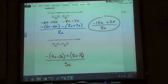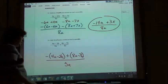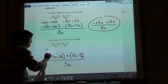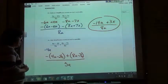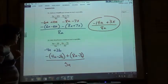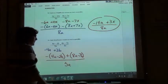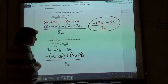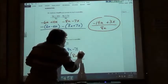So getting rid of our parentheses, what would we have up on top? We're going to have a negative 4a and a positive 2b. And then we're going to have a positive 8a and a negative 7b. Exactly.